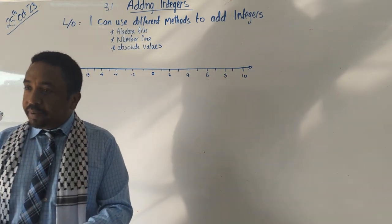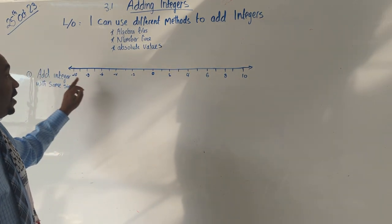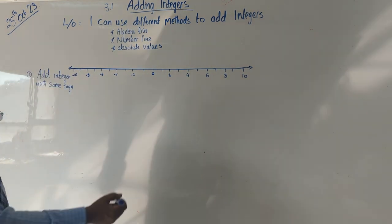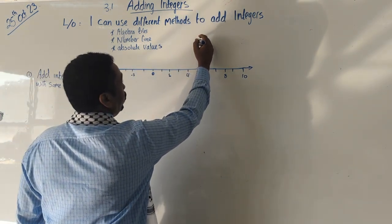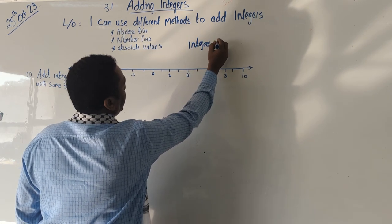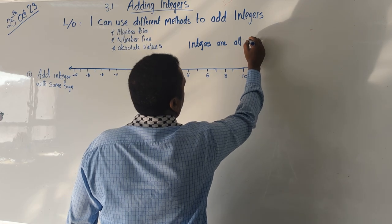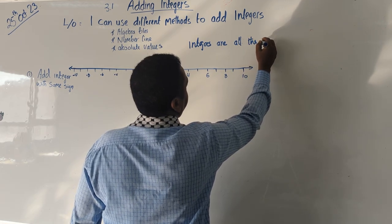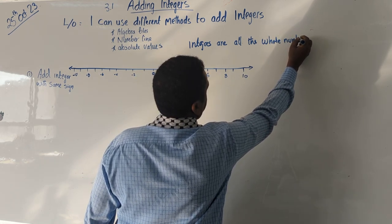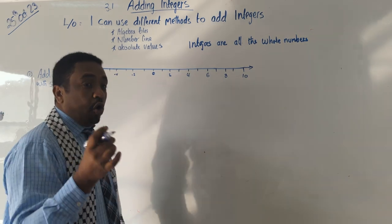So they include the negative numbers, they include zero, and they include every whole number. Any number which comes under all these is called an integer. So just quickly write down what integers are. Integers are all the whole numbers — when I say whole numbers, they don't include fractions, they don't include decimals.